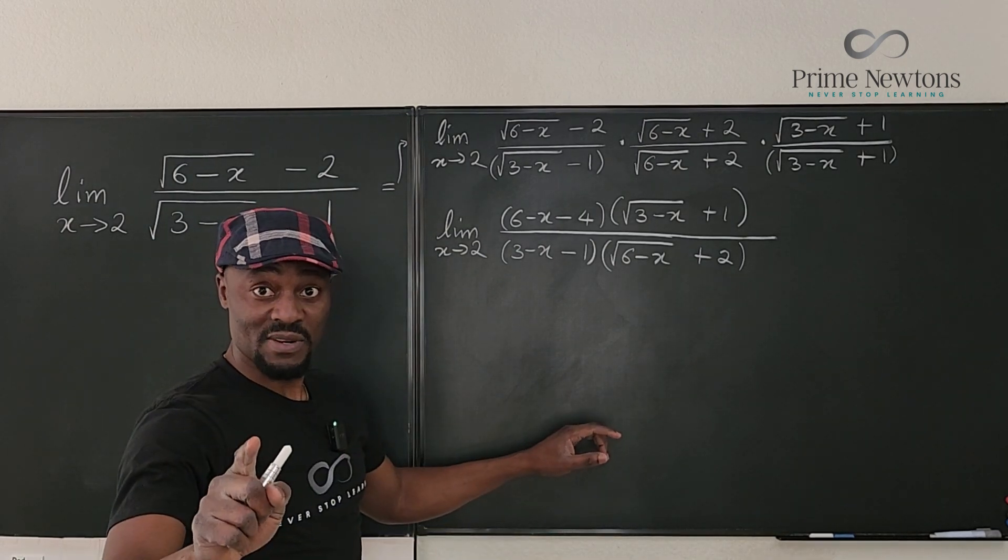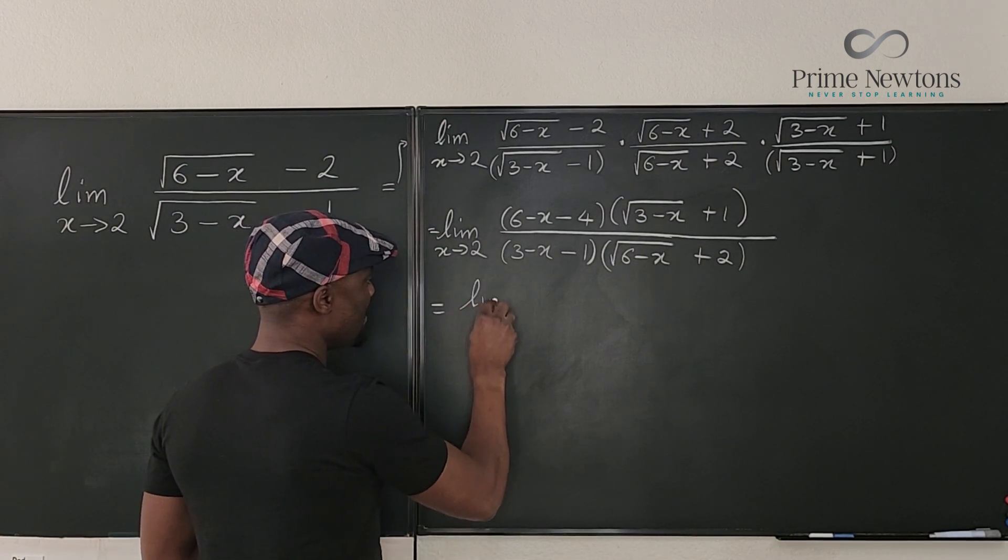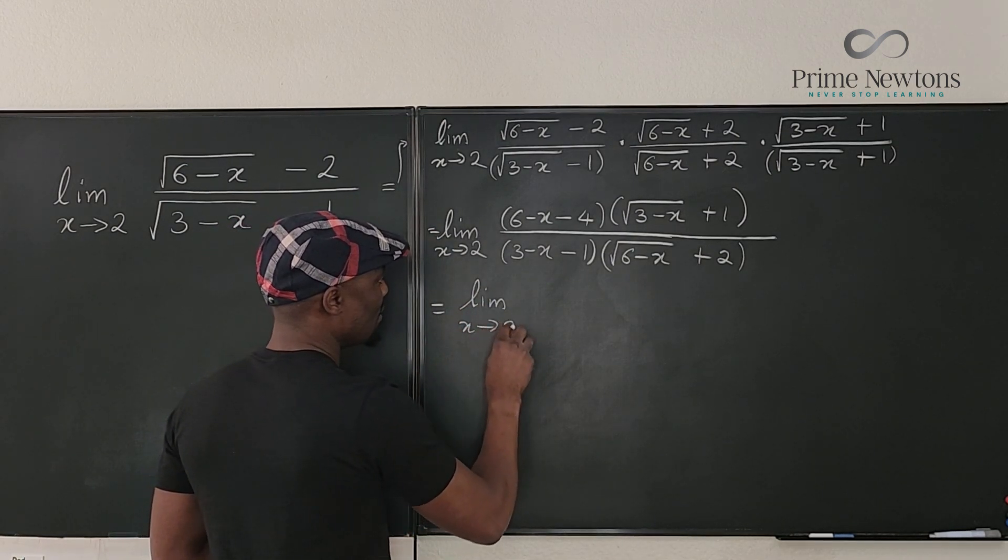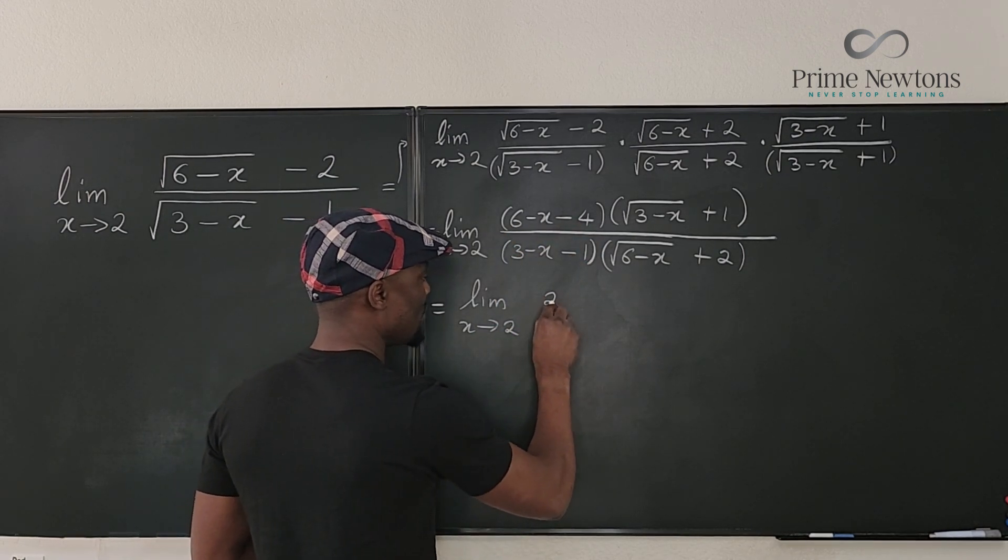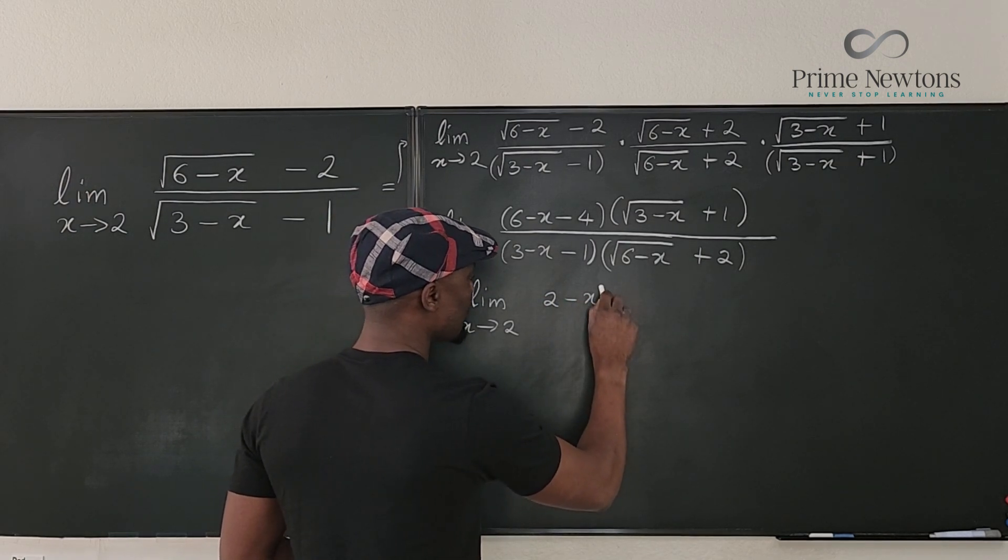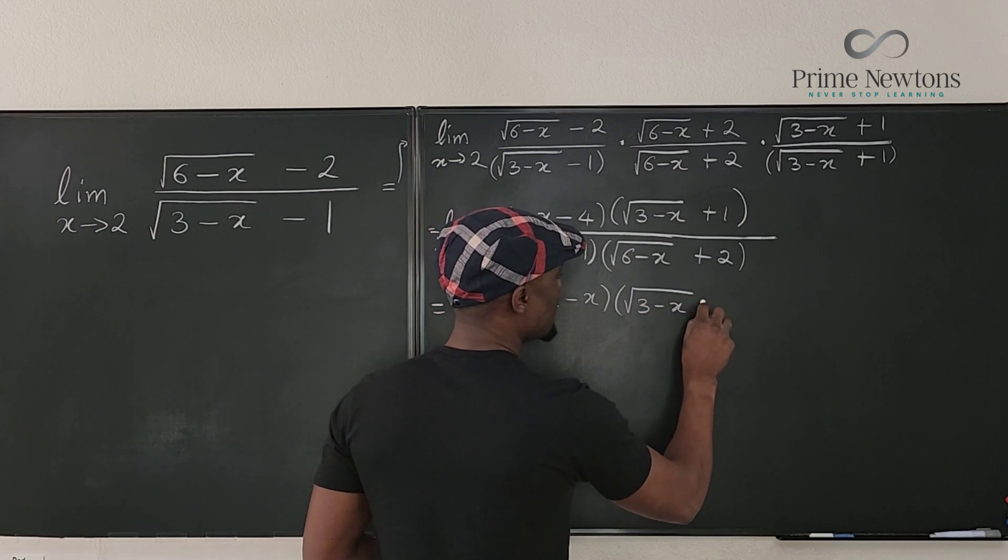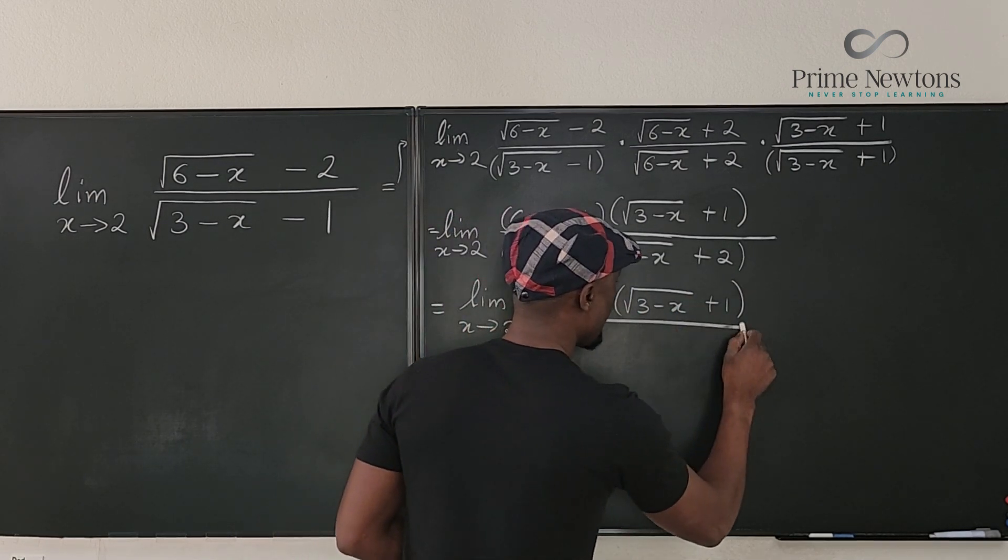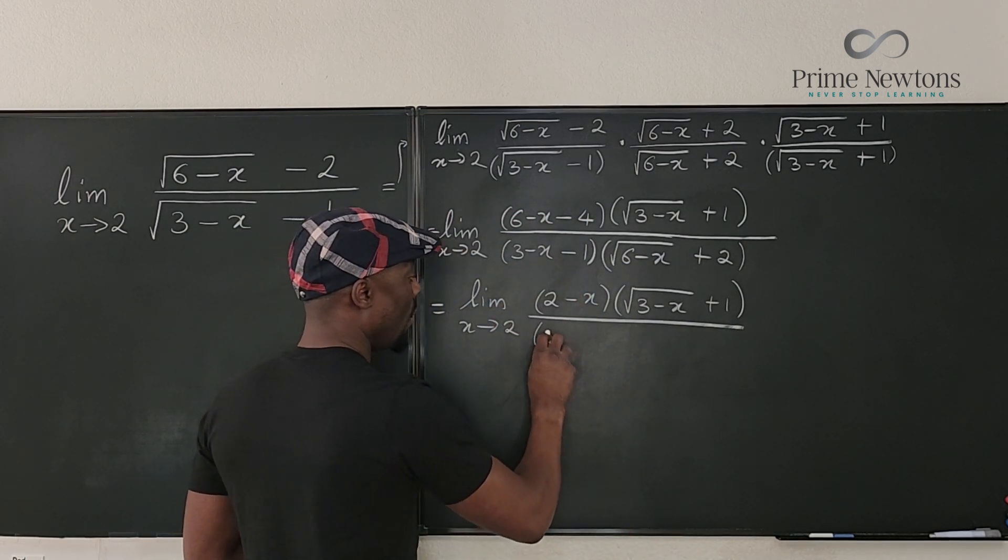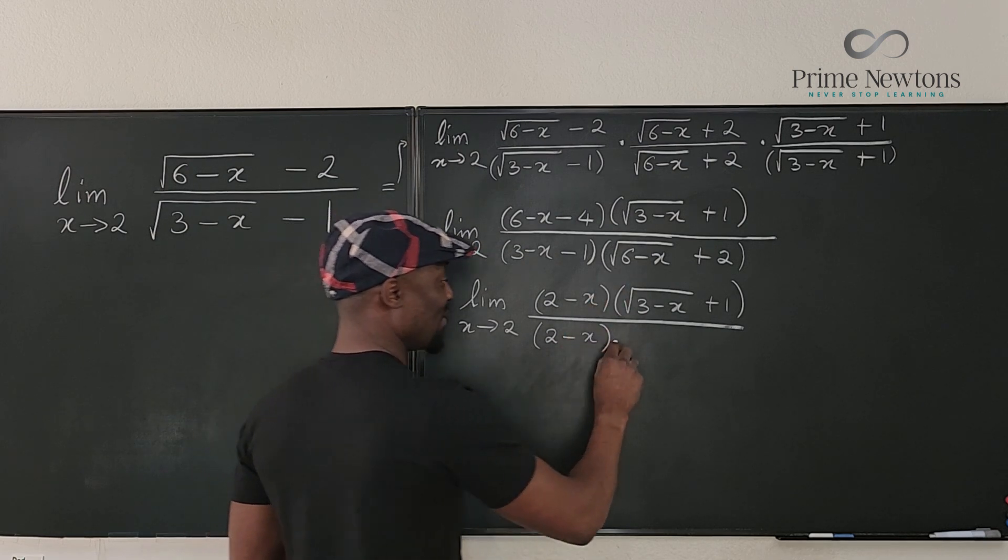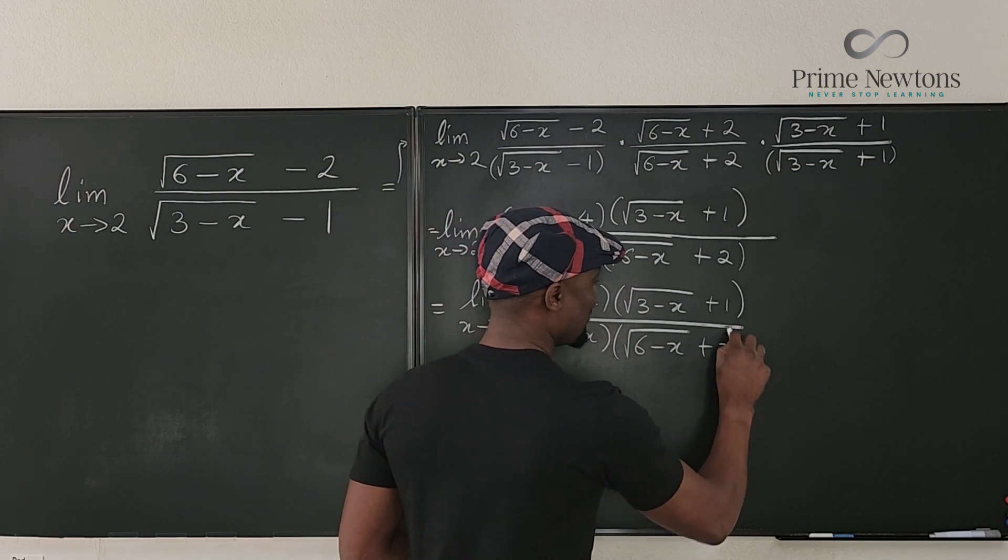So let's simplify further. This is equal to the limit as x approaches 2. If we simplify this, 6 minus 4 is 2. So what you have here is 2 minus x multiplied by rad 3 minus x plus 1 over, if we simplify this, 3 minus 1 is 2. Oh, we got 2 minus x on both occasions. That's interesting.